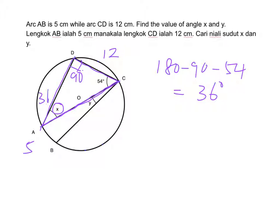Right, this is X. Next, let's look at Y. We want to find Y, and we are given that the arc here is 5 cm and the arc here is 12 cm.